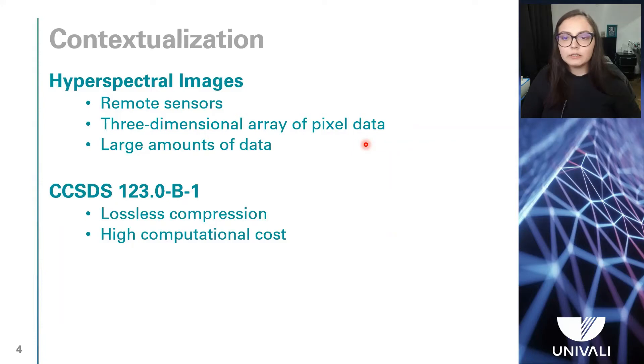To facilitate this communication, the Consultative Committee for Space Data Systems, which is also known as CCSDS, developed the CCSDS-123 standard as a lossless compression method for hyperspectral images. However, it has a high computational cost, which can compromise the restrictions that are imposed by the computer systems that are used in spaceships.